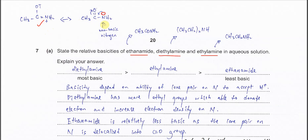So we say that ethyl amide has a non-basic nitrogen — its basic character is not really there. Diethylamine has two alkyl groups, and these two are electron-donating groups which push electrons to the nitrogen, giving it more electron density, making the lone pair more available. Ethyl amine has just one alkyl group, so its basicity is lesser than diethylamine.